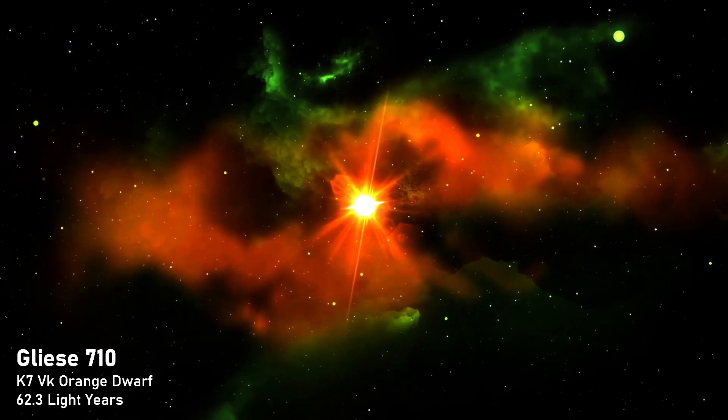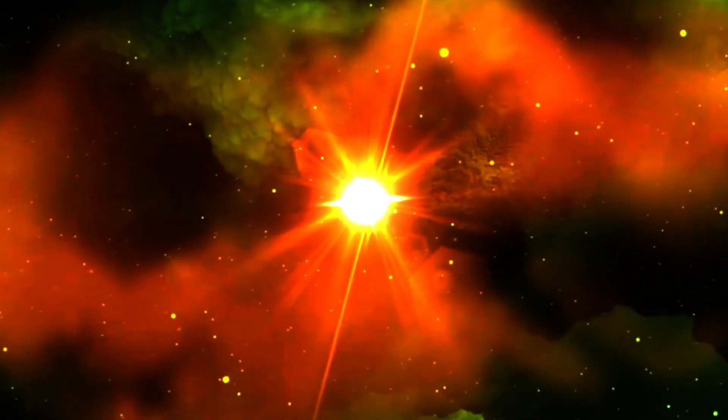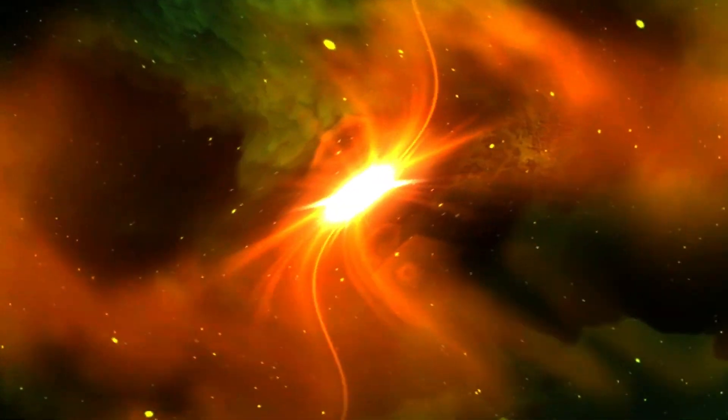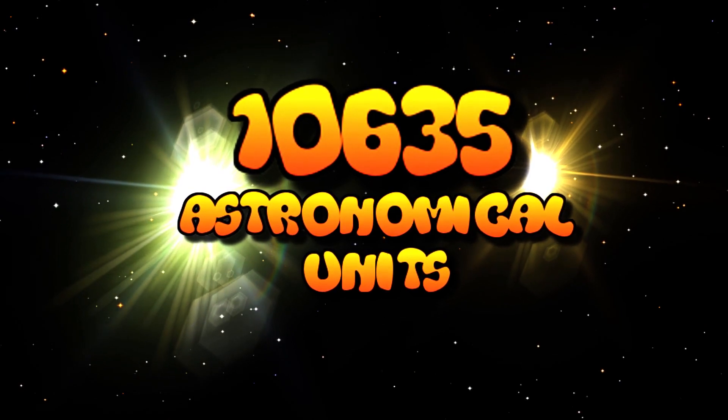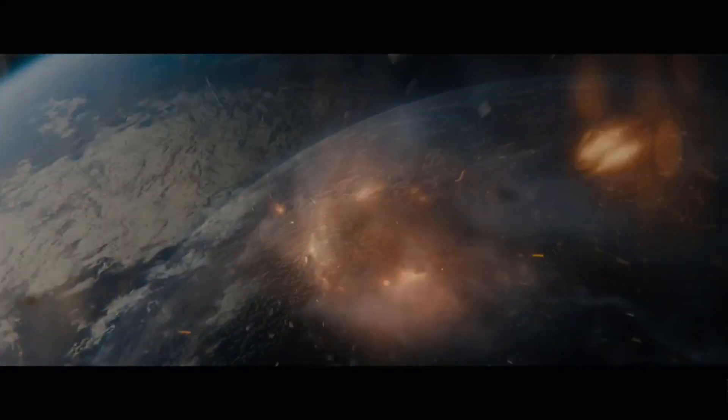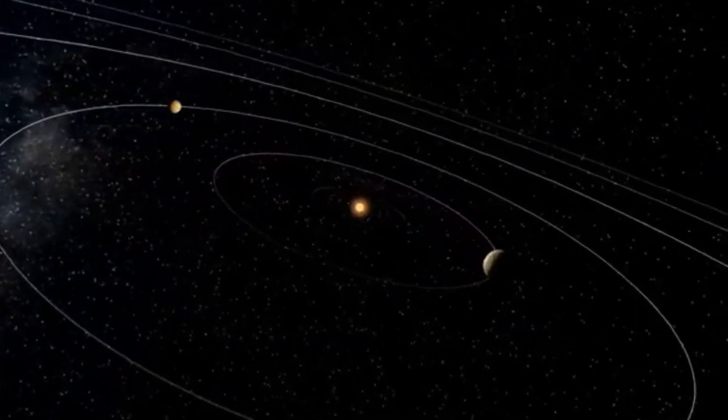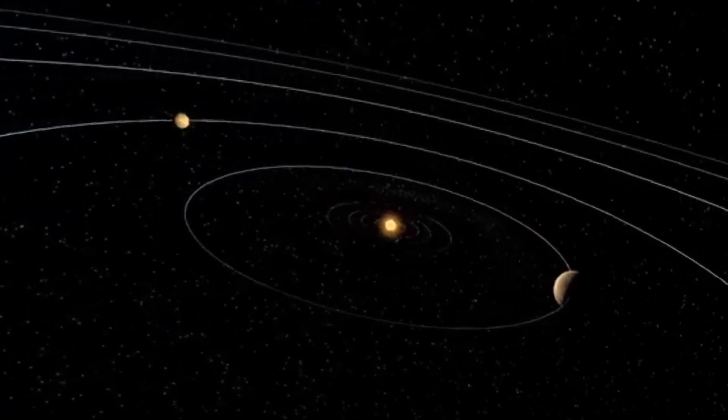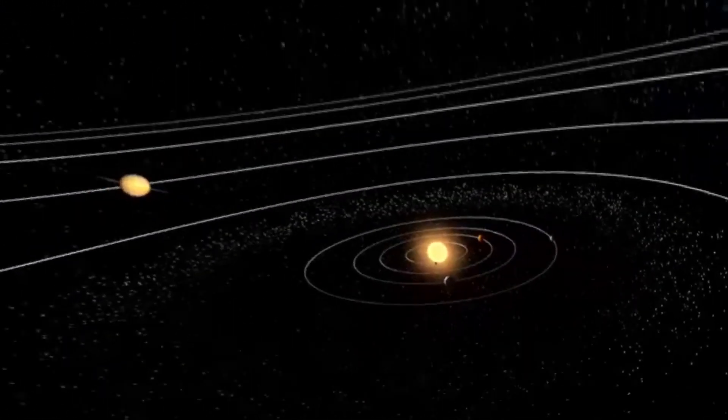Gliese 710 is a normal orange dwarf star that has scored a very big part in the future screenplay of our solar system. Predicted to come just shy of 10,000 astronomical units from our system, the effects on our Earth could be profound. From comets and asteroids raining down for millions of years, to even the giant planets themselves orbits being perturbed and changed which could lead to devastating and even life extinction scale potential events.